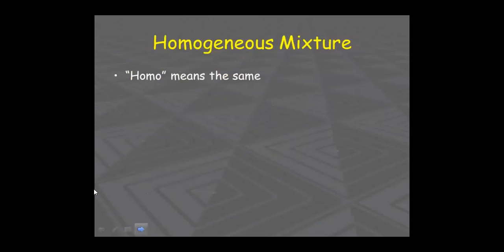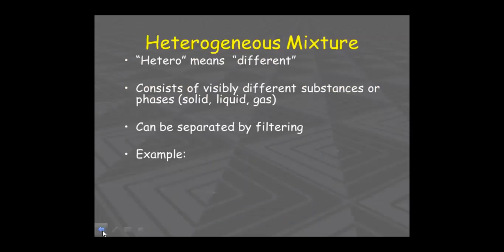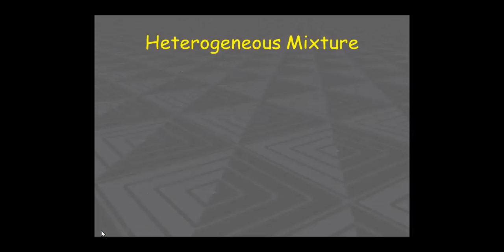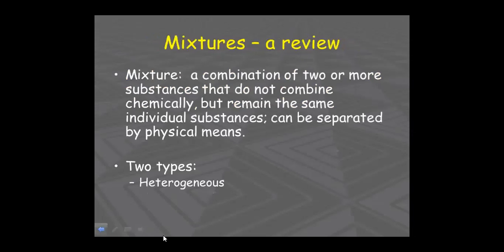We started from mixture because you need to understand what a mixture is. Mixtures are of two types: one is homogeneous and another is heterogeneous. A mixture is a combination of two or more substances that do not combine chemically.